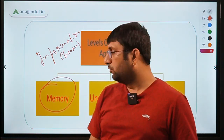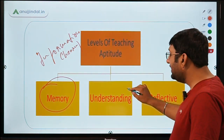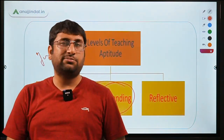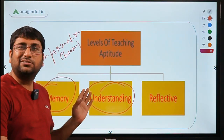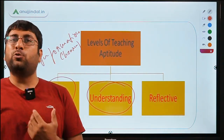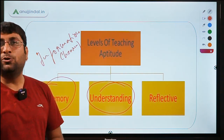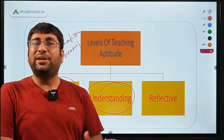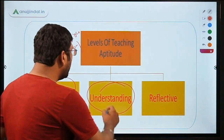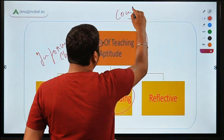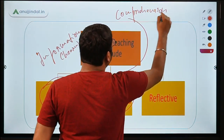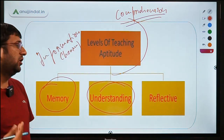The next level of teaching is the understanding level, which becomes prominent when students reach class 6, 7 or 8 and begin to grasp concepts. At this level, exam questions are no longer direct — students must read a scenario and understand it to write the correct answer. The focus shifts from memory to comprehension or understanding.